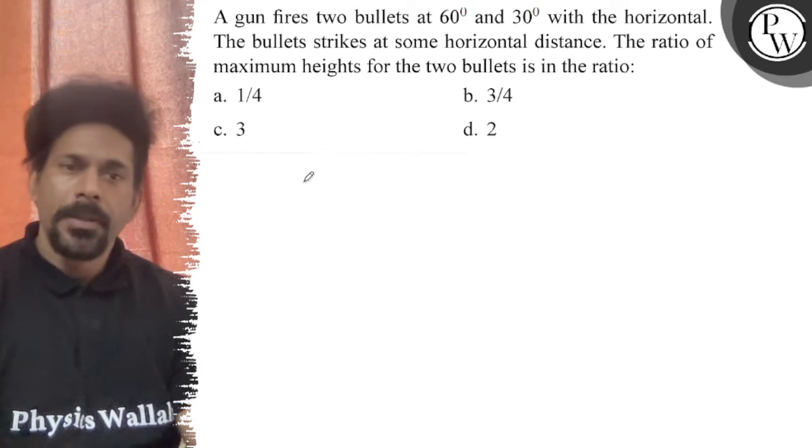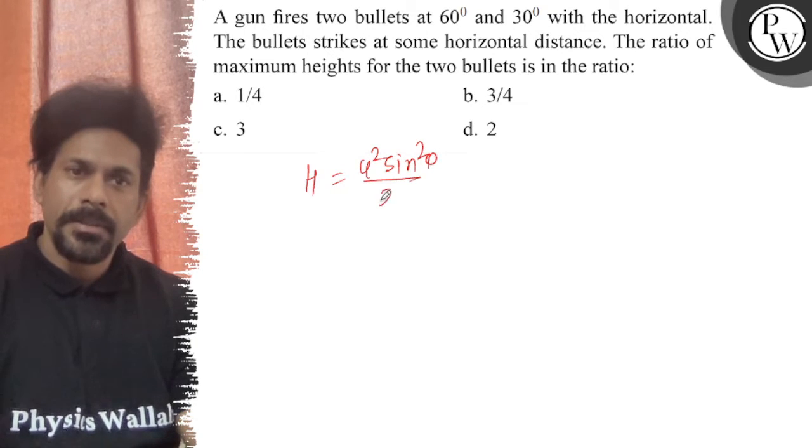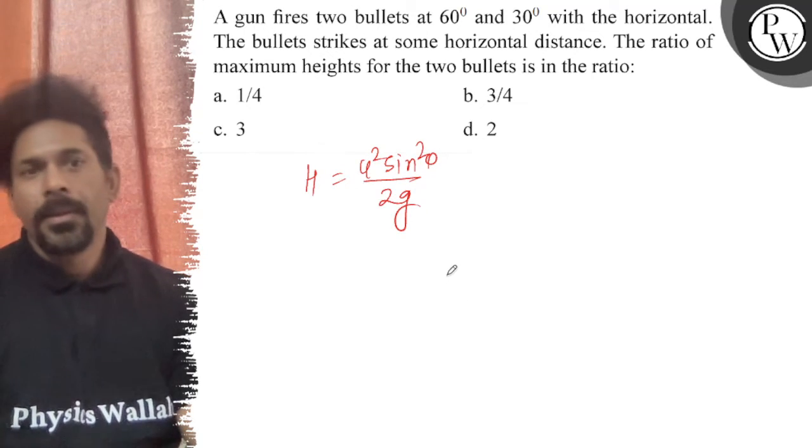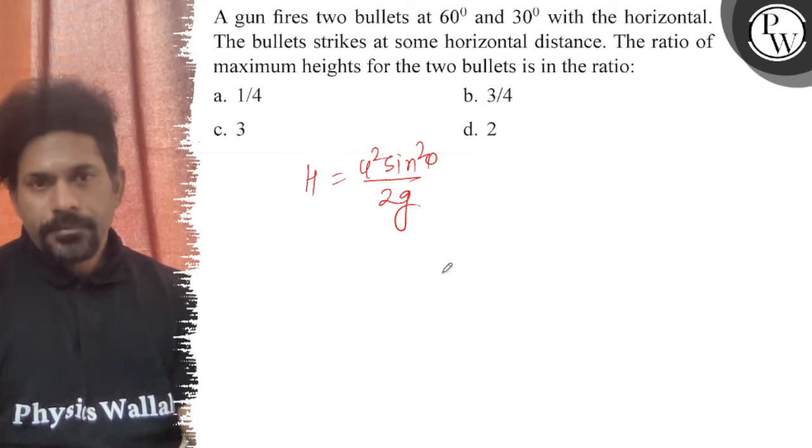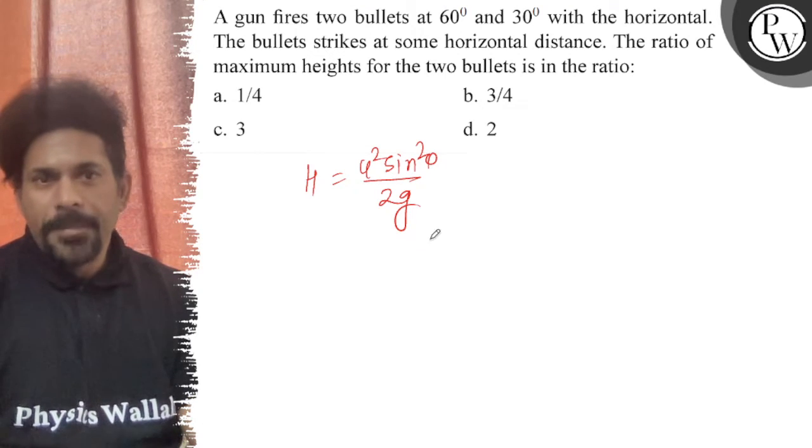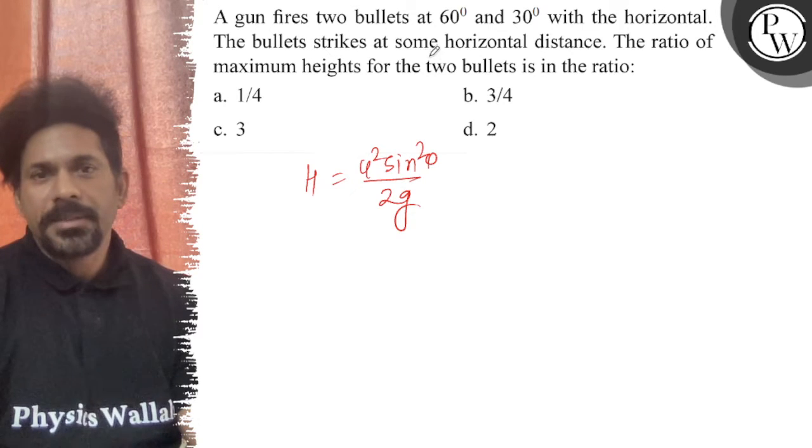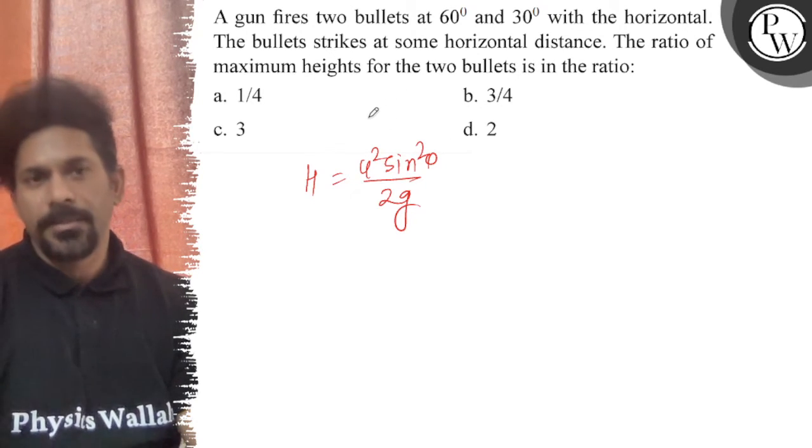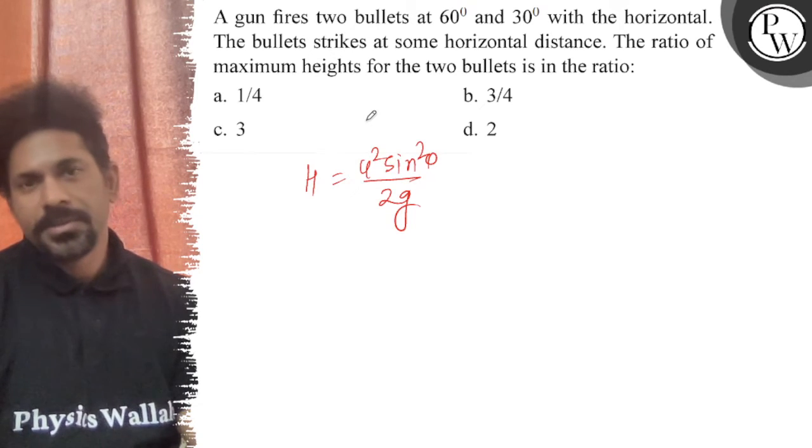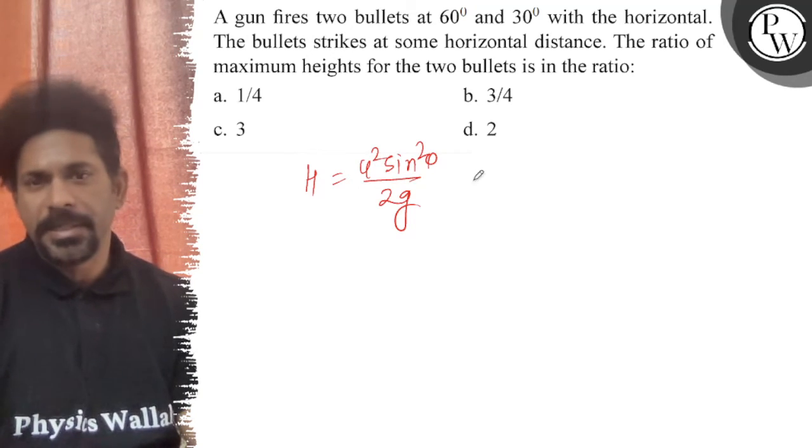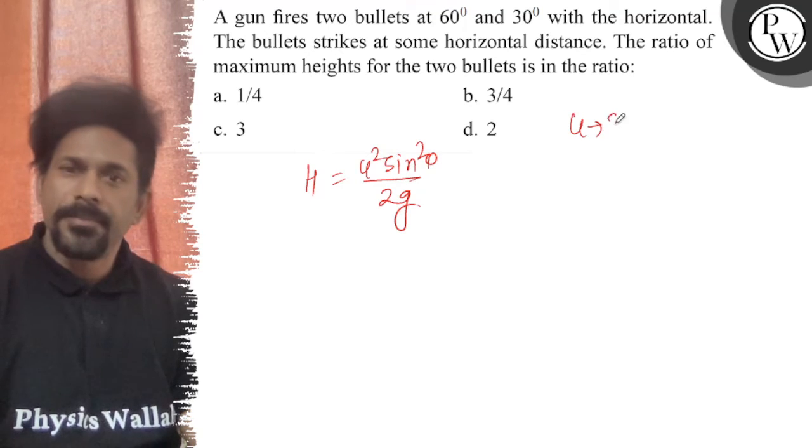So maximum height is equal to u² sin² θ divided by 2g. The bullets strike at the same horizontal distance. The ratio of the maximum heights for the two bullets is in the group, which means that we have the same speed. We are going to use the same u for both.